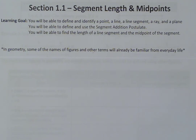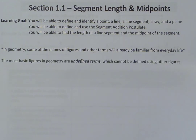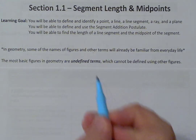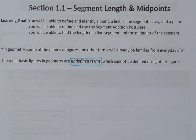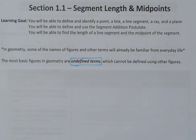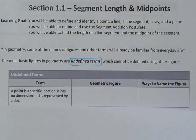So with that said, let's get into our first part for today. This first section talks about the most basic figures in geometry, which are undefined terms. An undefined term is a figure which cannot be defined using any other figures. It's not really the definition of undefined terms that's going to be vital for us, but we are going to look at the three undefined terms in geometry.